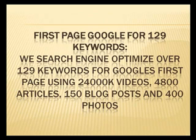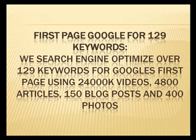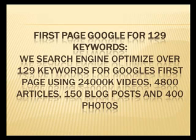We also include the first page of Google for 129 keywords. We search engine optimize over 129 keywords for Google's first page using 24,000 videos, 4,800 articles, 150 blog posts, and 400 photos.